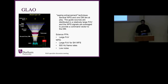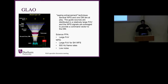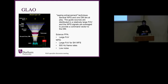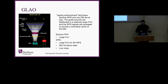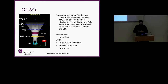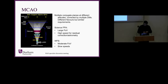Ground layer AO is a seeing enhancement technique. You use several wavefront sensors connected to a single deformable mirror, or maybe a couple of DMs, and you're really just trying to achieve a seeing enhancement over a broad field of view — maybe halving the full width half maximum of the profile. For this, in contrast to SCAO, we have a large field of view for the science focal plane array and a very large field of view for the wavefront sensor using a Shack-Hartmann. Frame rates are challenging but not too challenging, and low noise is best in everything.